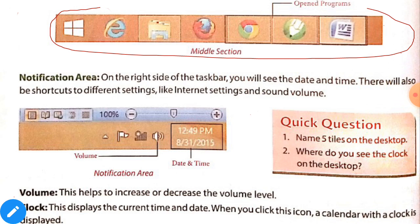The next thing you will see on your desktop is the notification area, on the right side of the taskbar. Here you will see the date and time. There will also be shortcuts to different settings like internet settings and sound volume. You can change your volume and date and time from this area.